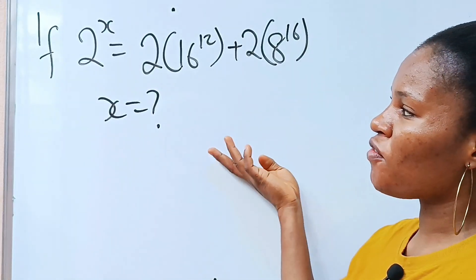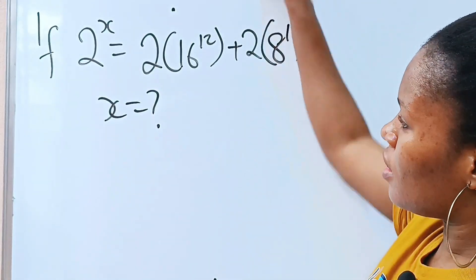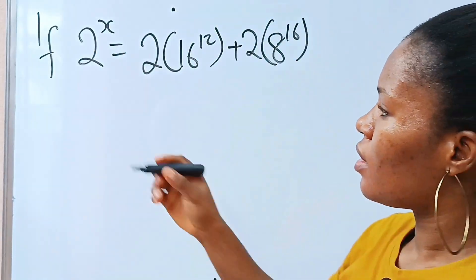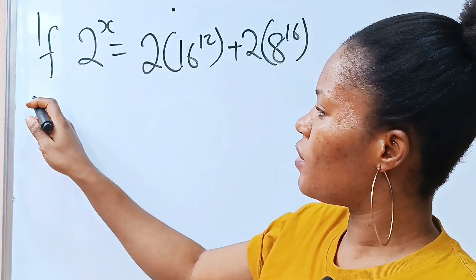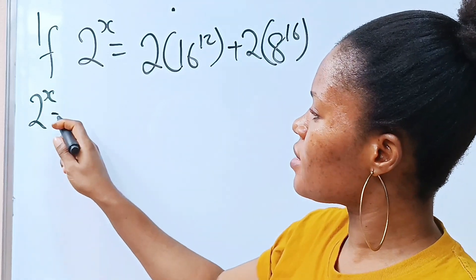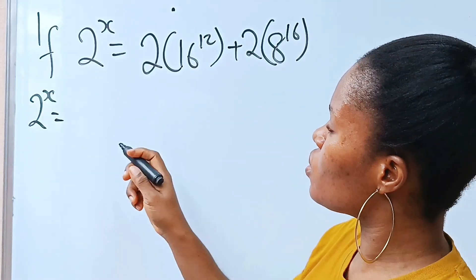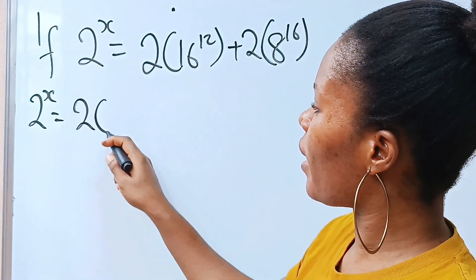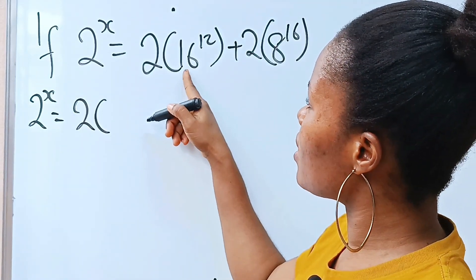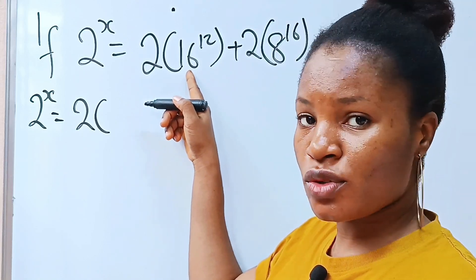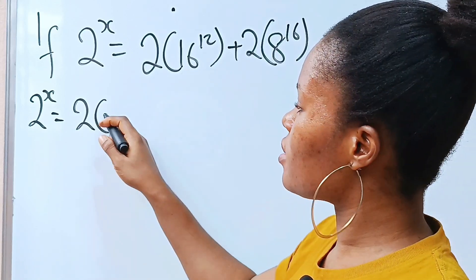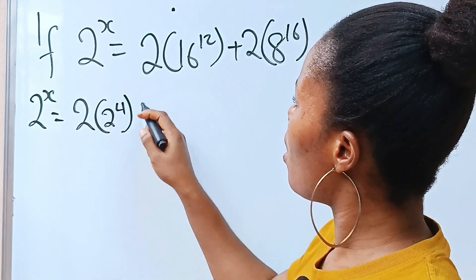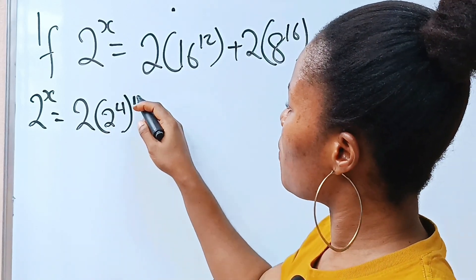Hi, let's solve for x. We have that 2 to the power of x is equal to 2 brackets. Now this 16 is written as 2 to the power of 4, so 2 to the power of 4 raised to the power of 12.